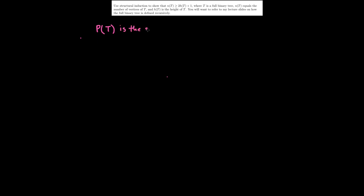The first thing we're going to do is define a proposition. This proposition is a function of the tree t, so P(t) is the statement that the number of nodes of the tree t is greater or equal to 2 times h(t) plus 1. We want to show this proposition is true for all t that is a full binary tree. Let's start with a basis.